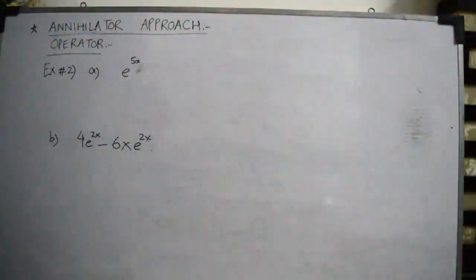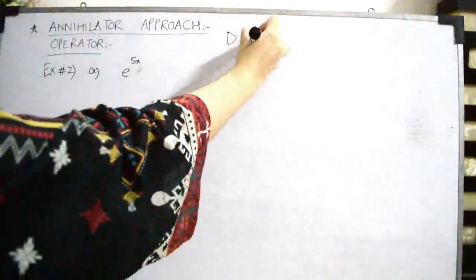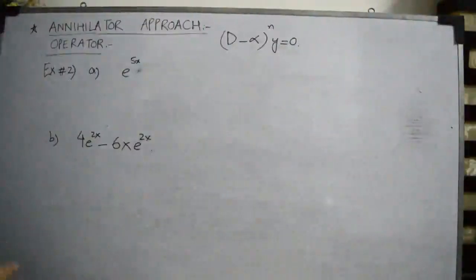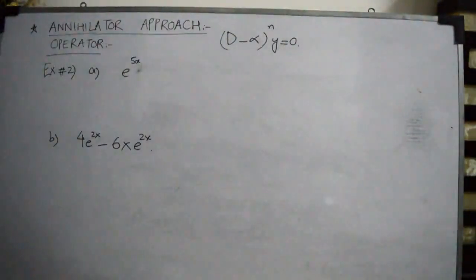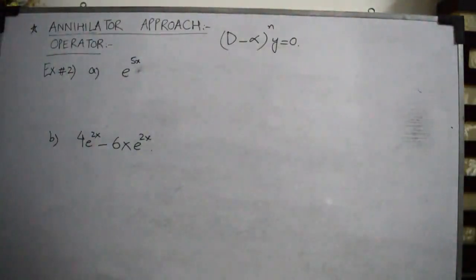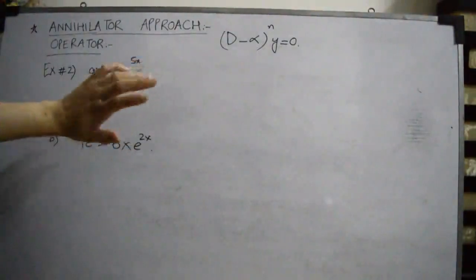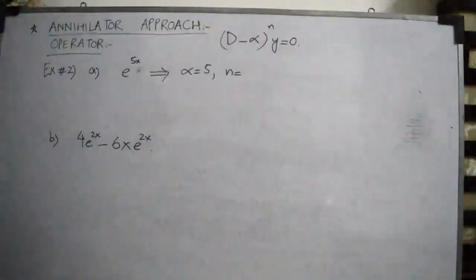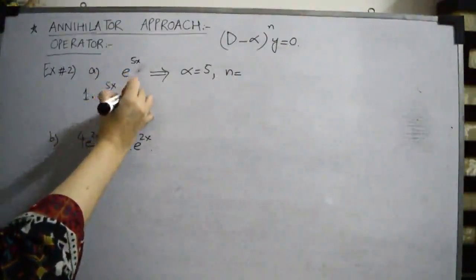In example 2, we have the function e to the power 5x. We know the generalized annihilator operator is (D minus alpha) to the power n, y equals 0. Here n is related to the highest power of x — you add 1 to the highest power of x to get n. So the differential operator is always one power higher than the highest power of x. We need to find the annihilator operator of e to the power alpha·x, where alpha is 5.